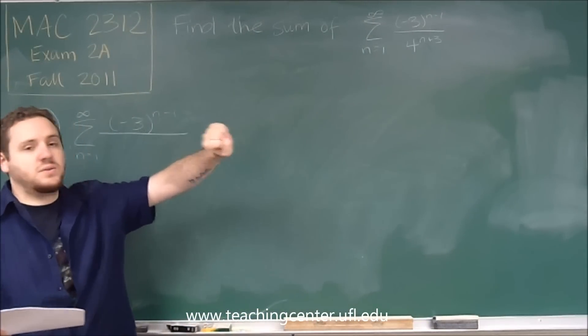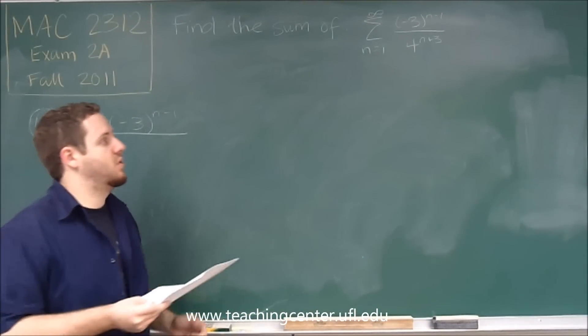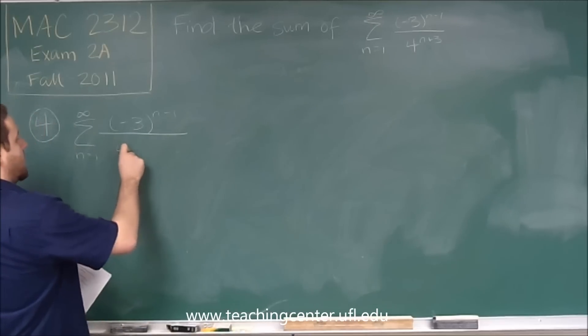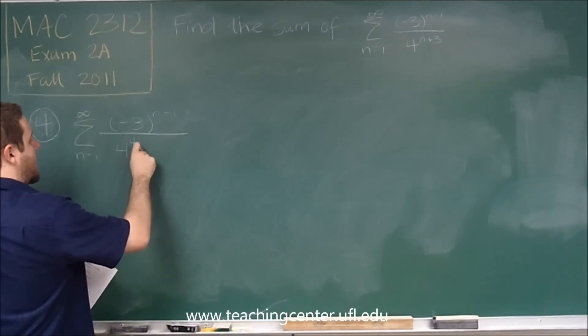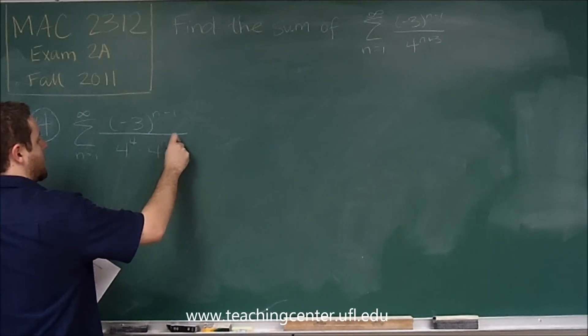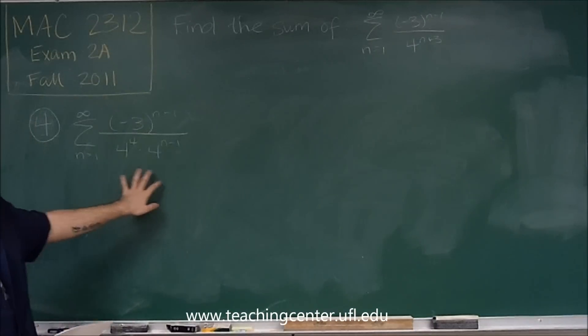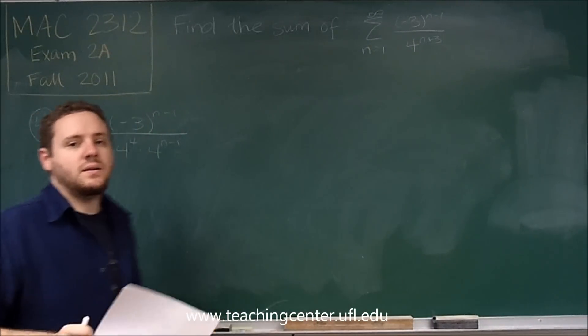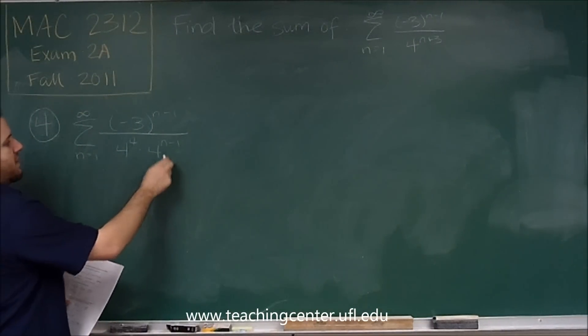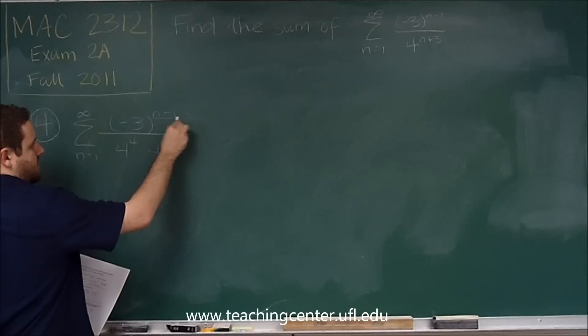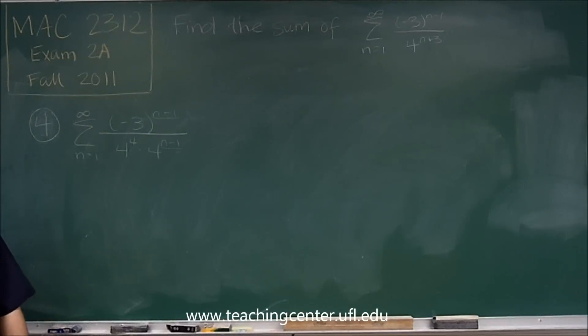This exponent is four units higher than n minus one. So if we do four to the four times four to the n minus one, that's a way that we can decompose n plus three. So this is the way we want it, because now this has an exponent of n minus one, and that has an exponent of n minus one.